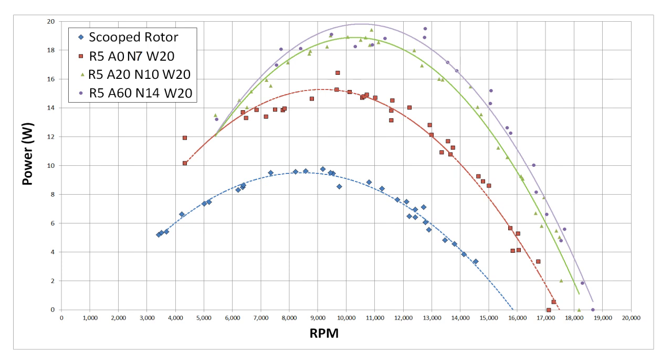This one peaked at 20.1 watts, just under 13,000 rpm. That's just under 4% improvement against the 10-bladed rotor, but more than double the output of the first rotor in my previous video.